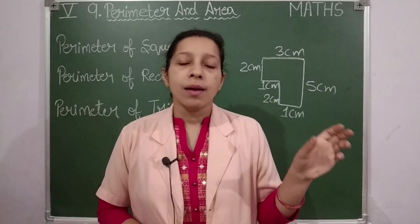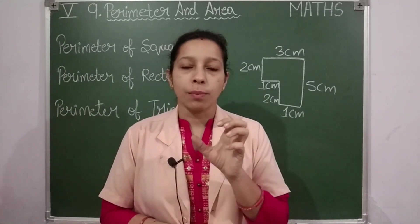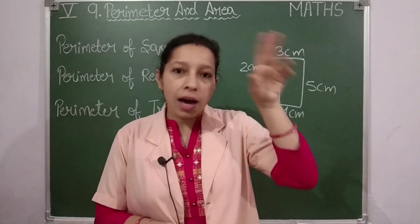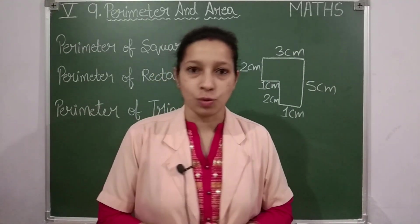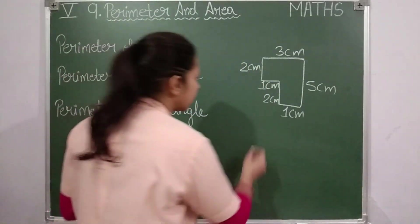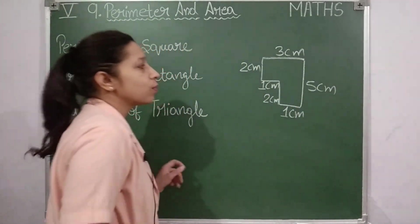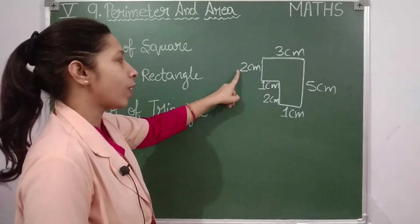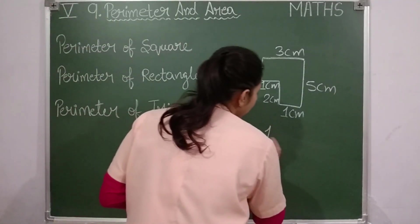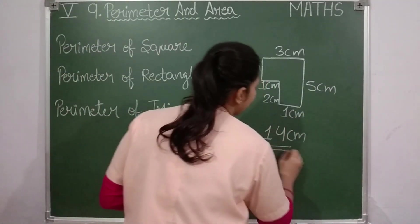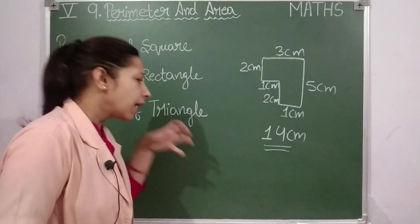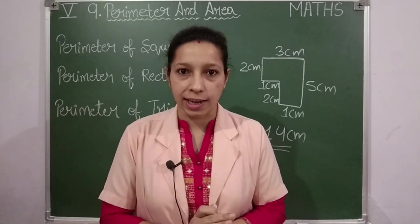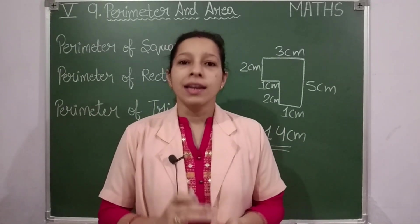Remember: 'peri' means 'around' and 'meter' means 'measure' — so measuring around something is its perimeter. The perimeter of this figure: three plus five is eight, plus one is nine, plus two is eleven, plus one is twelve, plus two is fourteen. So the perimeter of this figure is fourteen centimeters.